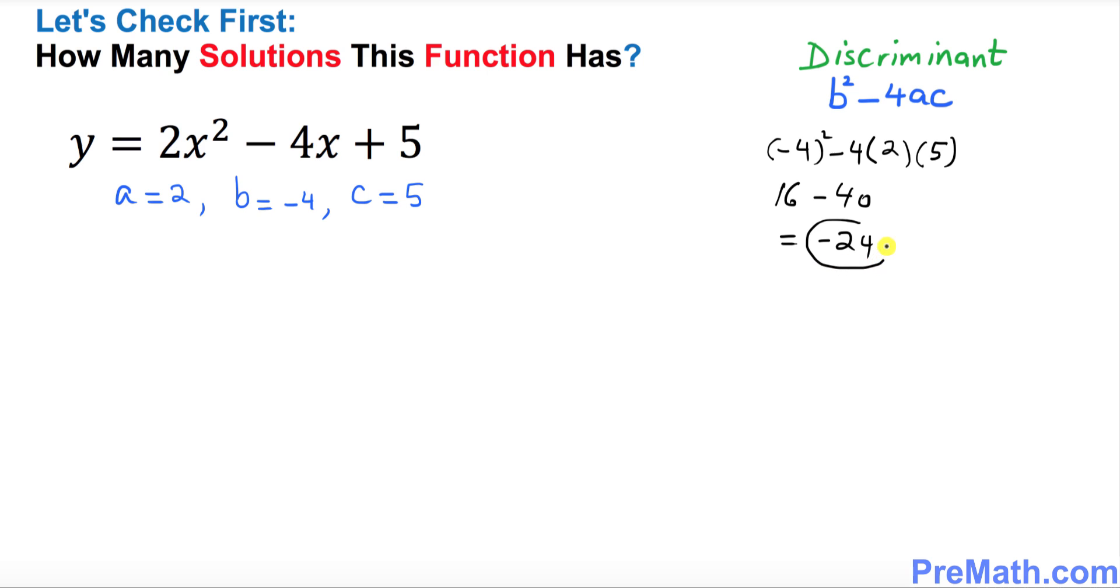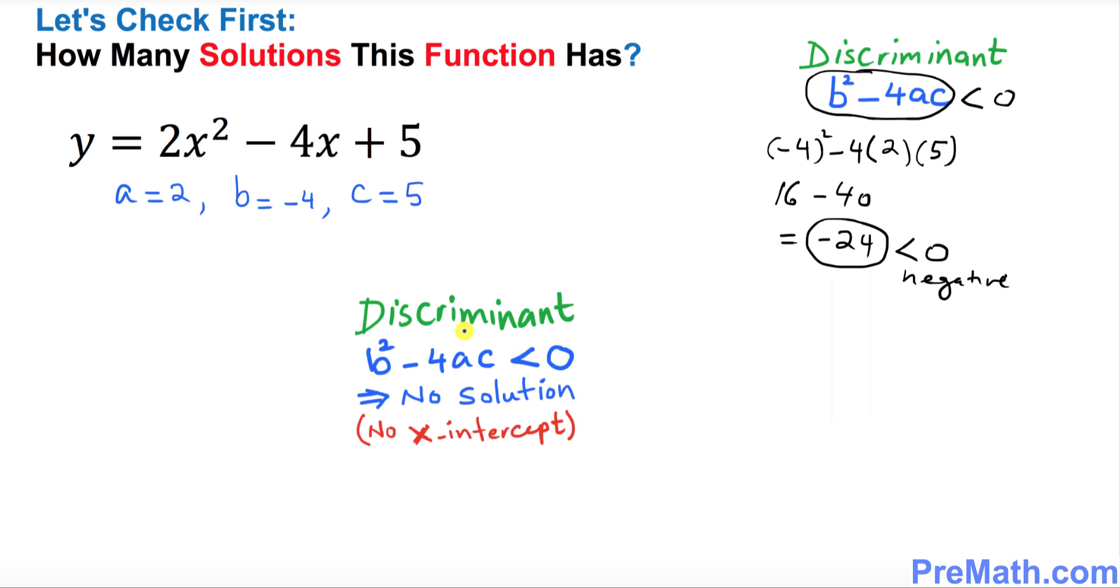You're going to see negative 24 is less than 0, which is a negative number. That means our discriminant is less than 0. If the discriminant is a negative number, if it is less than 0, then there is no solution whatsoever. In other words, no x-intercepts.